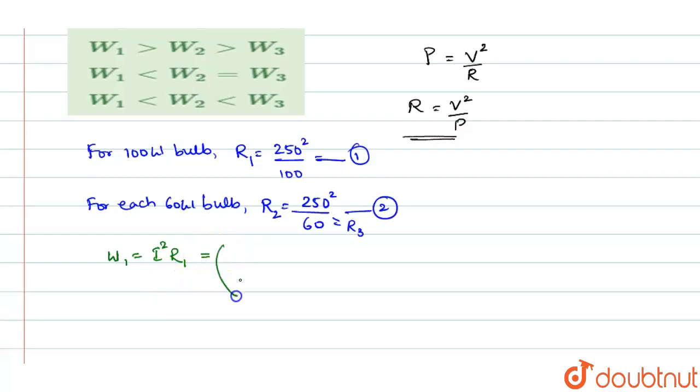Now, I is what? I is V by R. See, V is equal to IR. So I will be equal to V by R. It is voltage by total resistance.